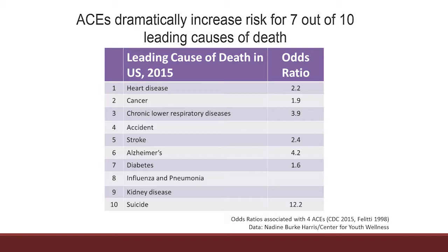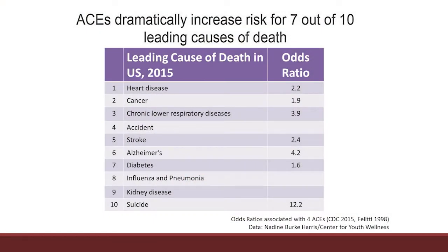Have any of you ever gone to the doctor and had the doctor ask you about trauma in childhood in relation to your heart health? Never — I've given this talk about 50 times, and only one time did someone raise their hand. Almost a 200% increased risk for cancer. Almost a 400% increased risk for chronic respiratory diseases. And here's the thing that freaks a lot of people out: Alzheimer's. A 400% increased risk for developing Alzheimer's if your ACE score is 4 — and I'm not saying 4 or more, I'm saying 4.